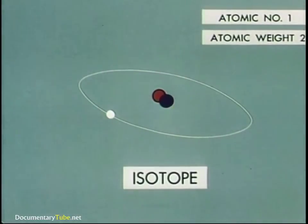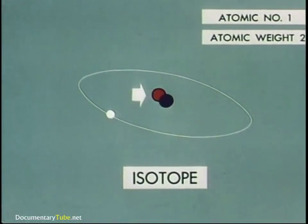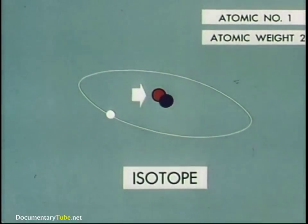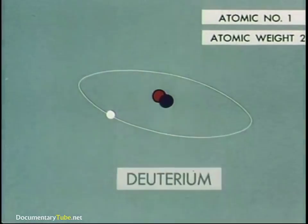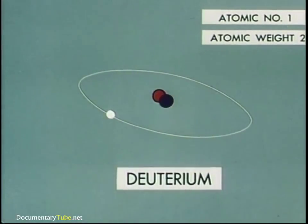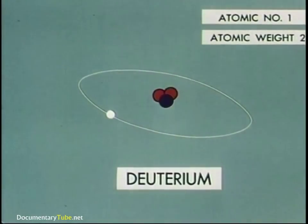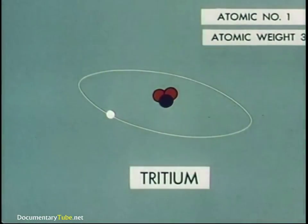For example, adding a neutron to a standard atom of hydrogen would produce the isotope of hydrogen known as deuterium. This is the hydrogen in heavy water. Adding another neutron produces a third hydrogen isotope called tritium.